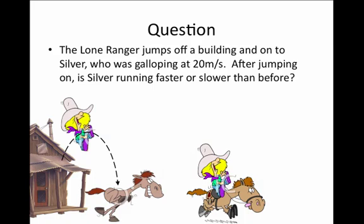The question now is, after jumping on the horse, will the horse be running slower or faster or the same speed as before if the horse and the Lone Ranger form an inertial system?